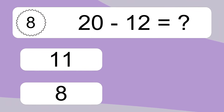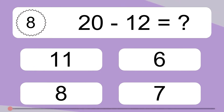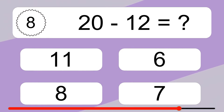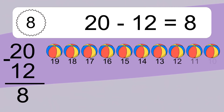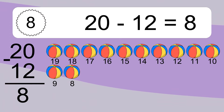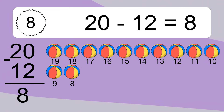20 minus 12 equals what? 20 minus 12 equals 8. Let's count it: 19, 18, 17, 16, 15, 14, 13, 12, 11, 10, 9, 8.